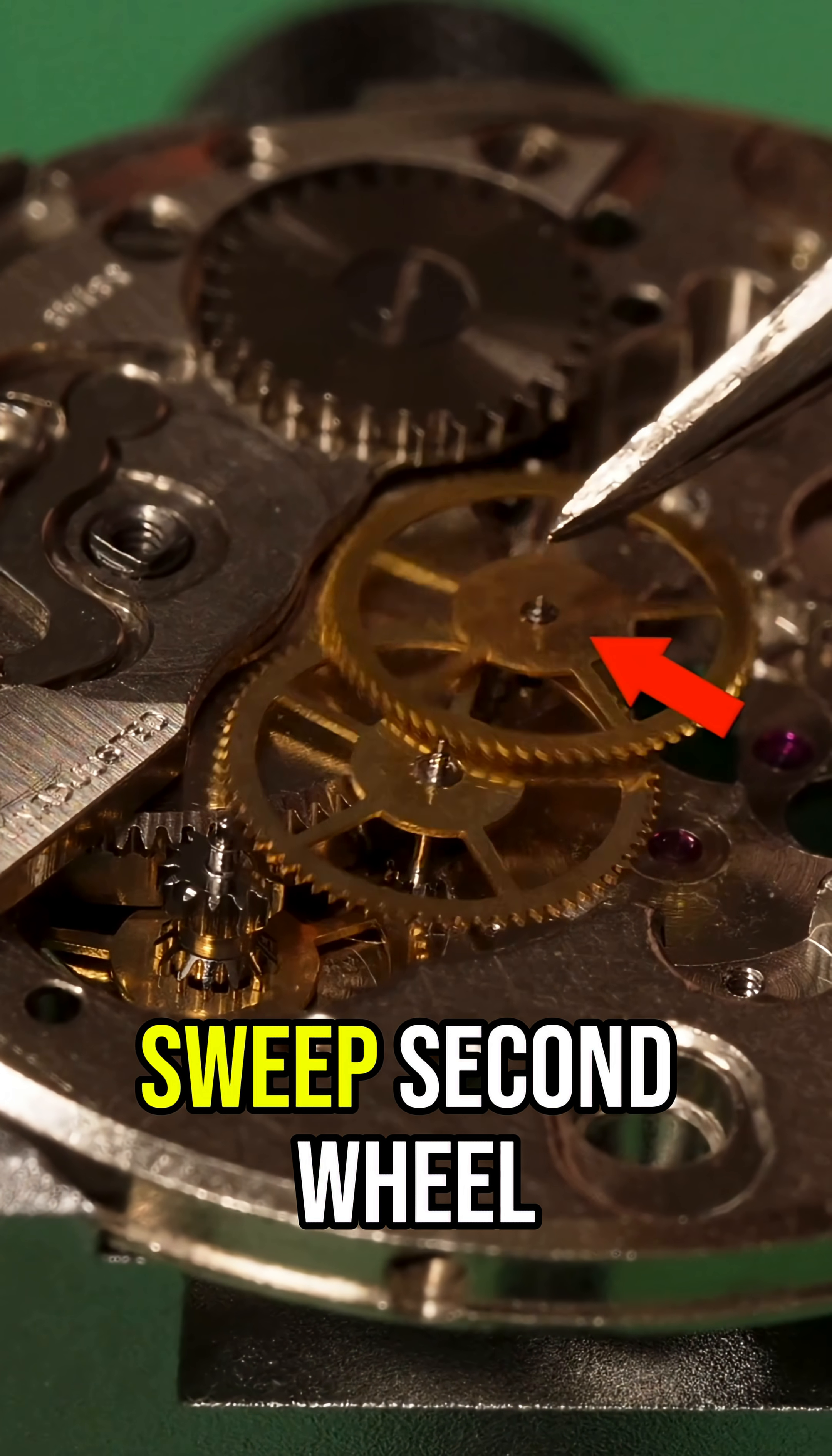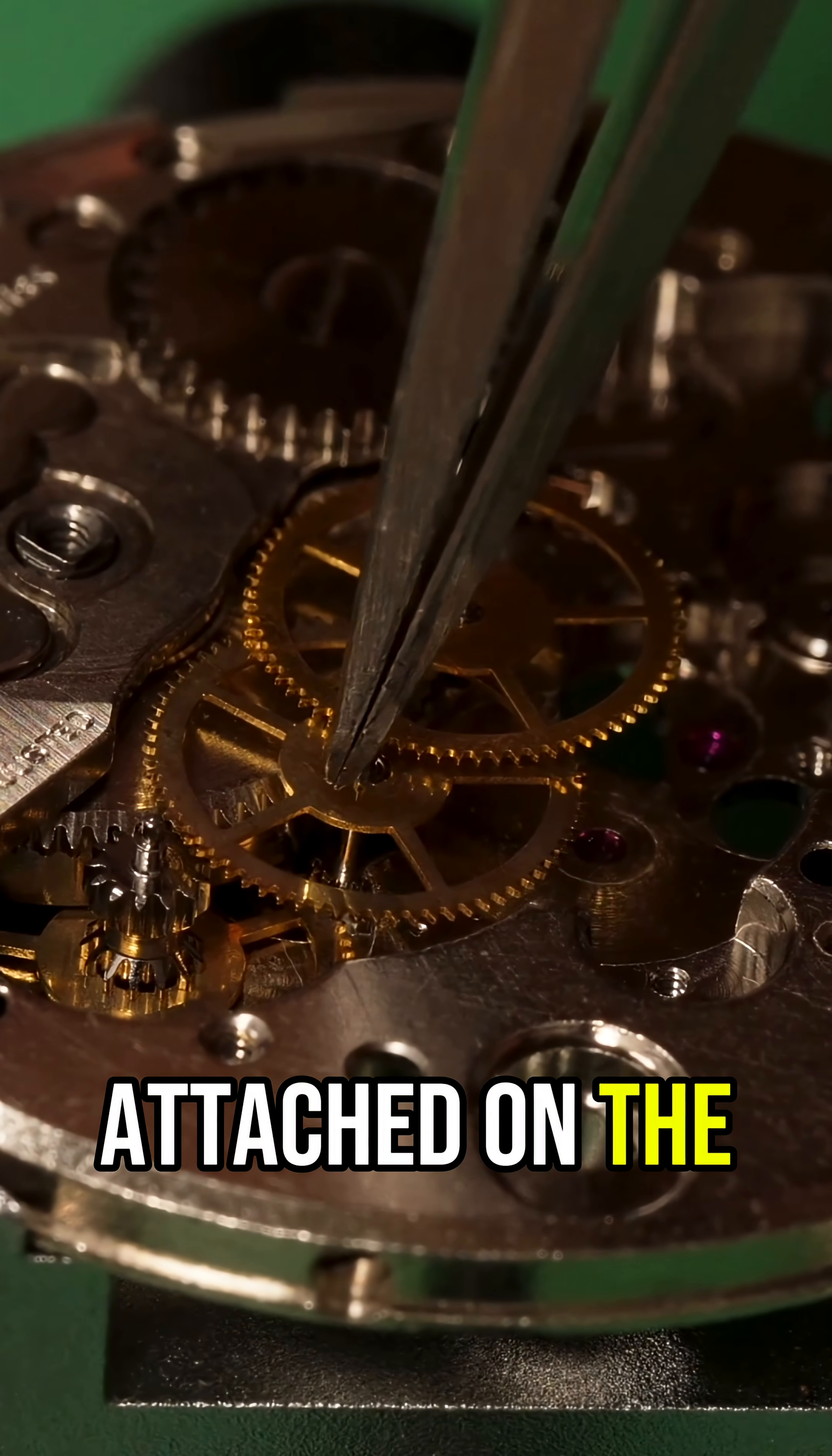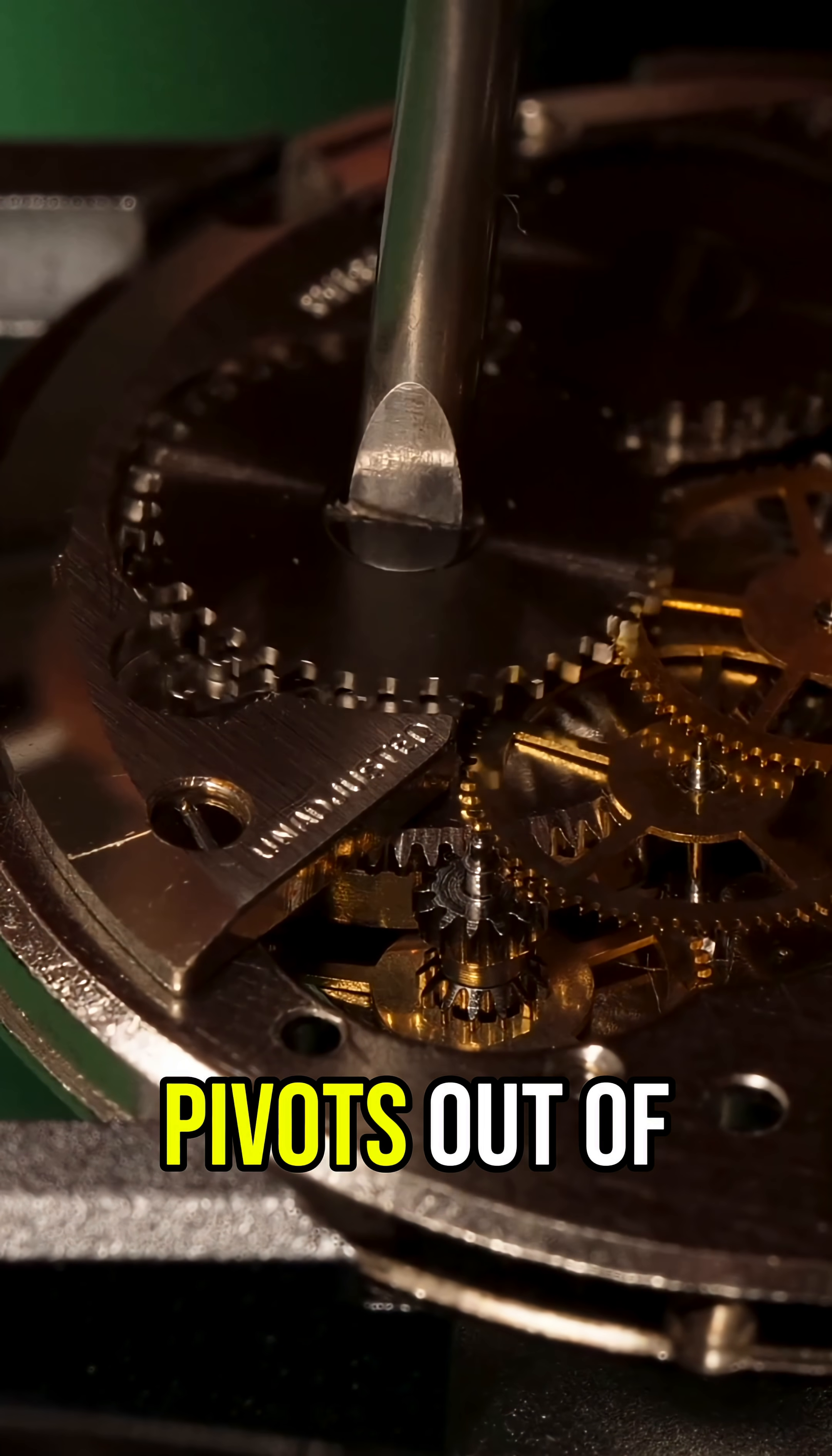From there it transfers to the sweep second wheel and that long pivot is where the second hand gets attached on the other side of the movement. Let's screw this in carefully so we don't take all the pivots out of place.